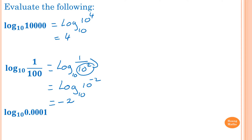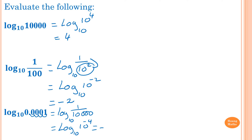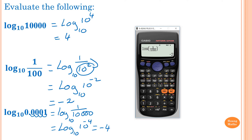Now log of 0.001 — we move the decimal: 1, 2, 3, 4 — so which is equal to log base 10 of 1 over 10,000, which is log base 10 of 10 to the power of negative 4, and the answer is negative 4. You can check it using a calculator: log(0.0001) equals negative 4.